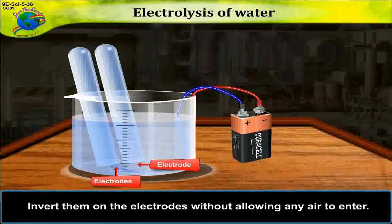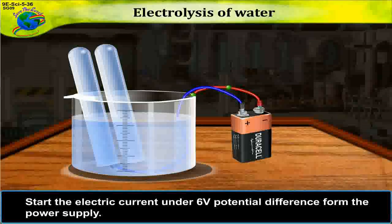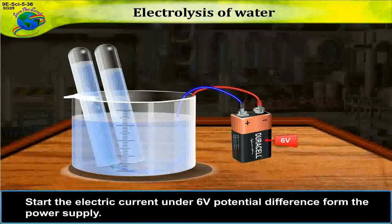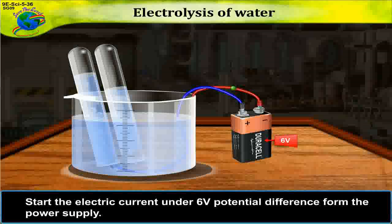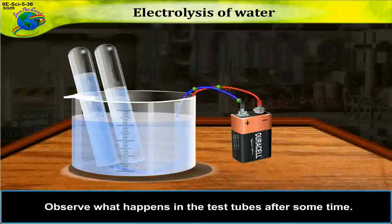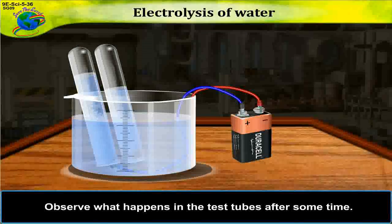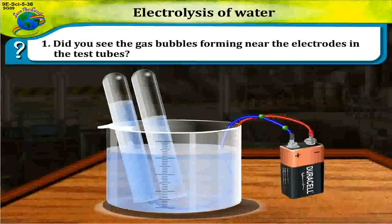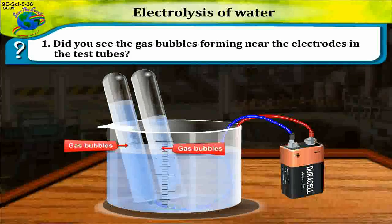Start the electric current under 6 volt potential difference from the power supply. Observe what happens in the test tubes after some time. Question 1: Did you see the gas bubbles forming near the electrodes at the test tubes?